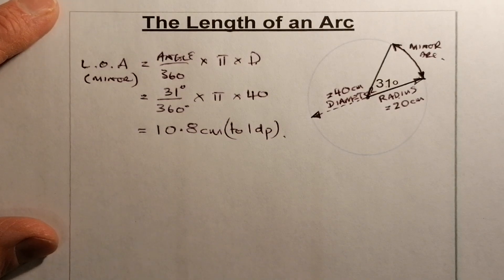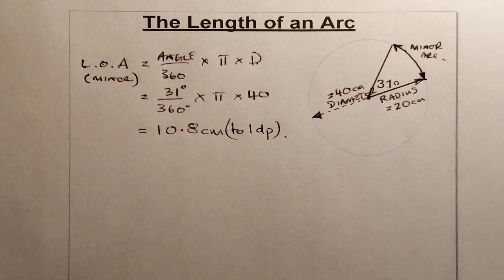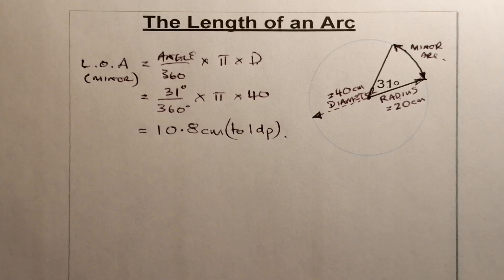Hopefully this has helped you understand the length of arc calculation. Next we'll be doing one on the area of a sector, which is very similar. The only difference is that instead of the circumference, we use the area of a circle — so it will be the fraction times πr². That's all for this video, good luck.